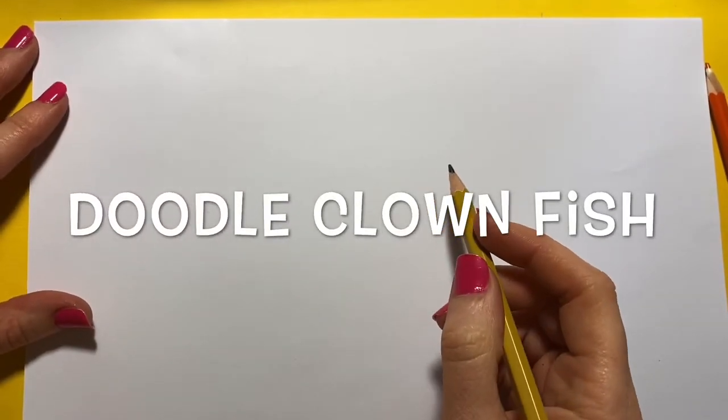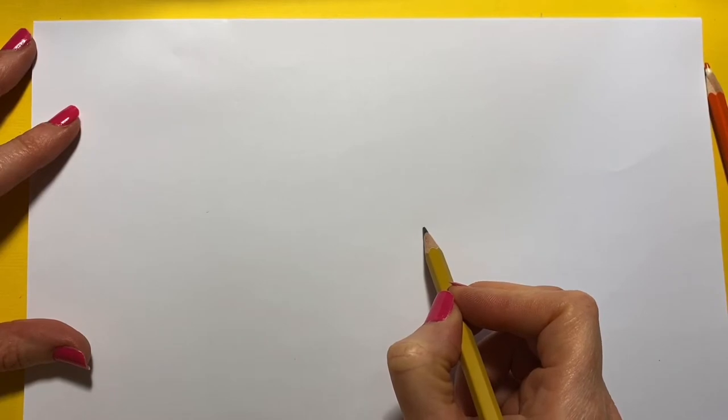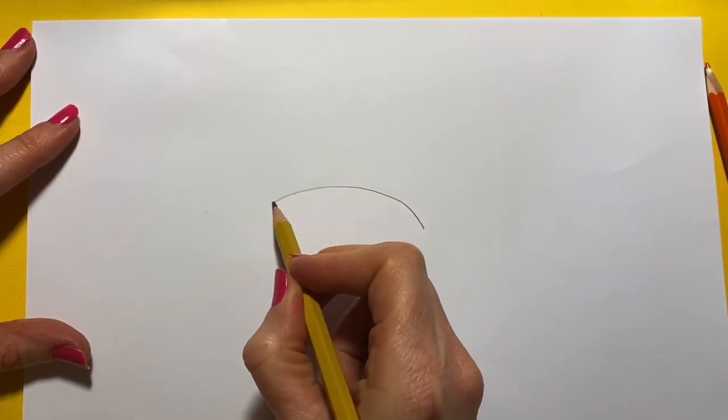Okay, let's doodle our clownfish. This is the fish that looks like Nemo. So we're going to draw an oval shape, just do a shape like this.